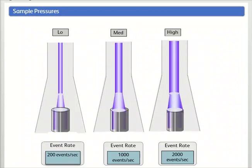The sample pressure settings in BD cytometers are adjustable via controls on the instrument, controls in the software, or both.